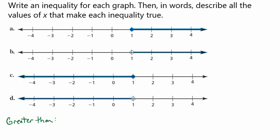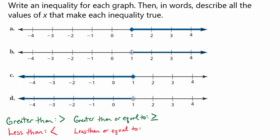Our greater than symbol looks like that. Our less than symbol looks like a sideways L. Our greater than or equal to symbol looks like the greater than symbol but with a line underneath it. And our less than or equal to symbol looks like that sideways L with a line underneath it. These symbols with the line will be our closed circles, and the symbols without the line will be our open circles.